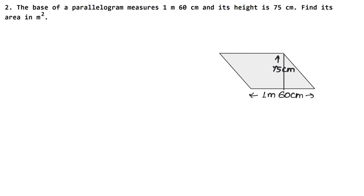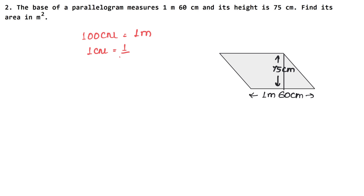We have to find the area in m². So we need to convert the measurements to meters. We know that 100 cm equals 1 m, which means 1 cm equals 1/100 m.